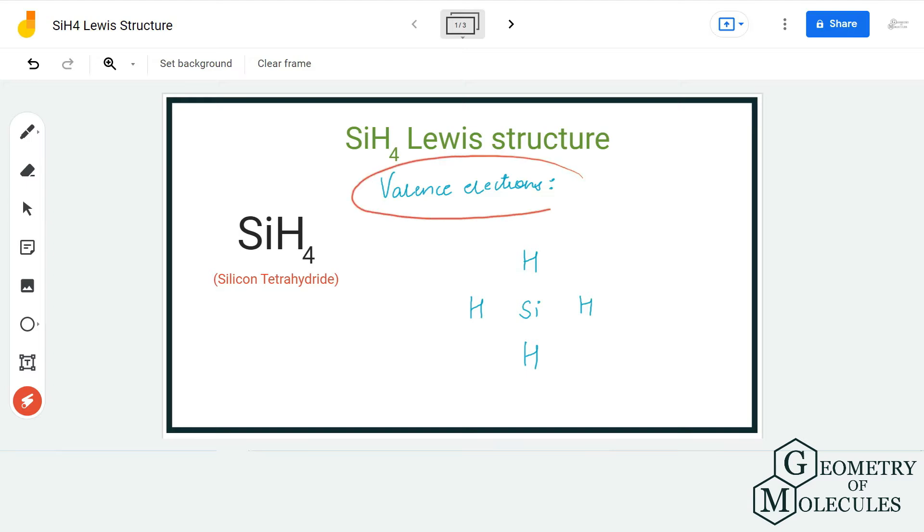To find out its Lewis structure, we will first determine the total number of valence electrons for this molecule. We have one silicon atom which has four valence electrons, and each hydrogen atom has one valence electron. In total, we have eight valence electrons for this molecule.